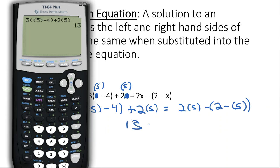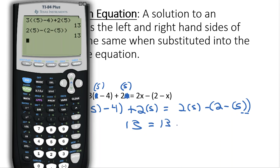We get 13. Then for the right-hand side: 2, parentheses, 5, parentheses, minus 2, minus parentheses, 2 minus parentheses 5, close parentheses. Notice there are 2 parentheses here, so we have to close the second set. We make sure that what we've typed in our calculator matches the right-hand side of the equal sign exactly. We press enter and we get 13. Since 13 equals 13, we know that x=5 is the solution.